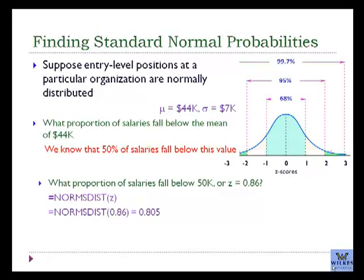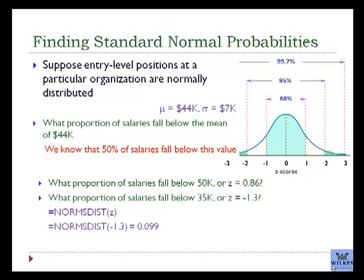What if we want to find probabilities? What proportion of salaries falls below the mean of 44,000? We would expect 50%, so we won't repeat that. But for 50,000, or a Z-score of 0.86, if we plug this Z-score into the standard normal distribution function, we get a probability of about 80%. If we plug in 35,000, or a Z-score of negative 1.3, we get a probability of 9.9%.